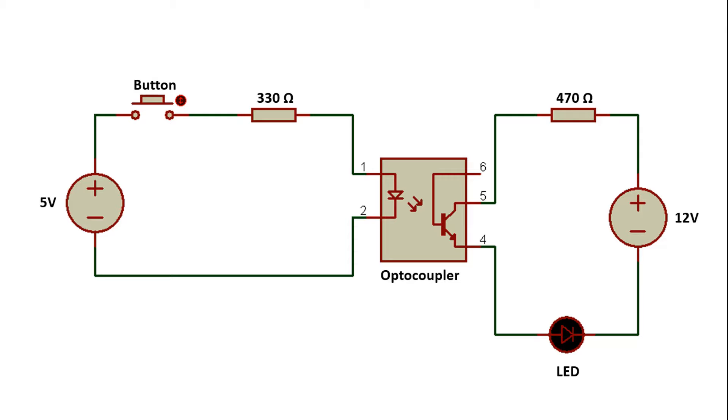Thanks to the optocoupler, we can wirelessly control the circuit on the right without any electrical connection with the circuit you see on the left. This isolation is provided by only infrared light. When we press the button in the circuit on the left, a low current flows through this circuit.